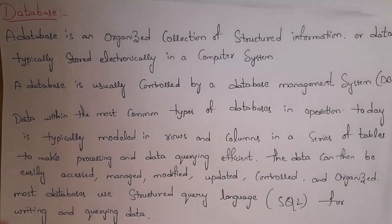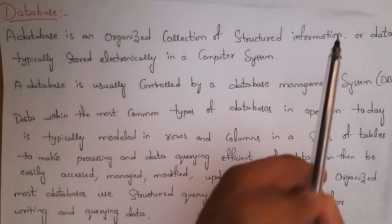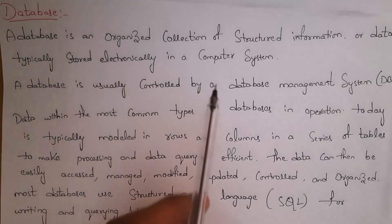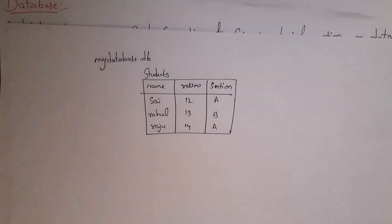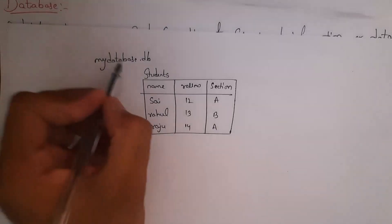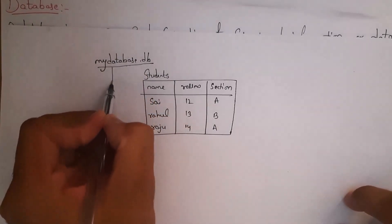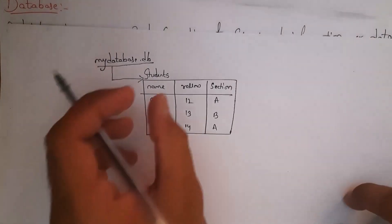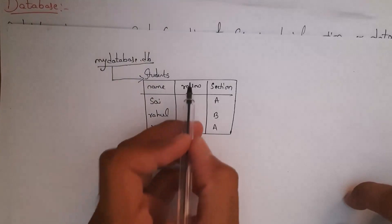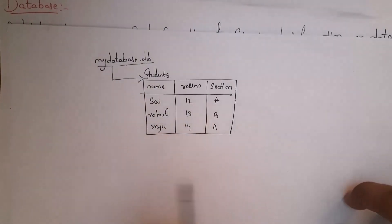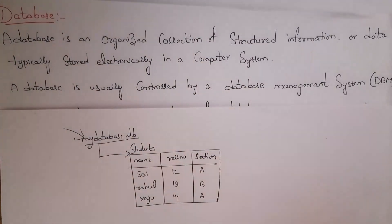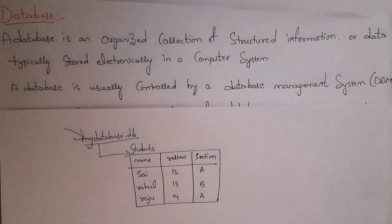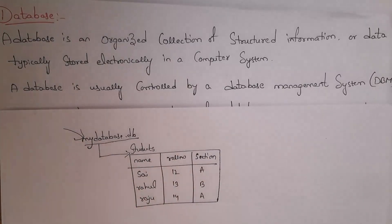A database is an organized collection of structured information or data, typically stored electronically in a computer system. For example, consider a database named mydatabase.db — inside this database there is one table called 'students', containing names like Sai, Rahul, Raju, and roll numbers 12, 13, 49, and sections. 'Organized collection' means data is stored in organized format — all names in one place, roll numbers in one place, and sections in one place.